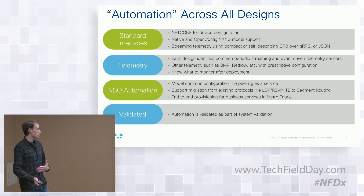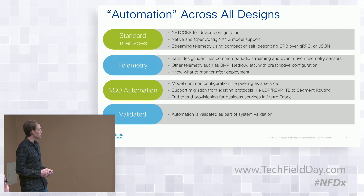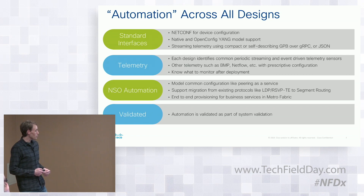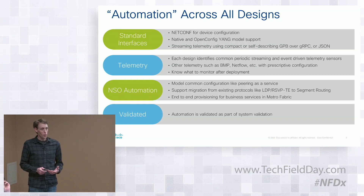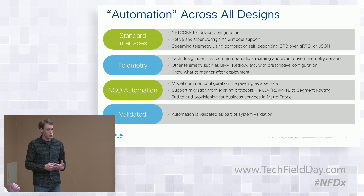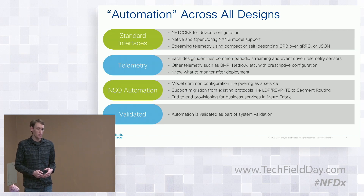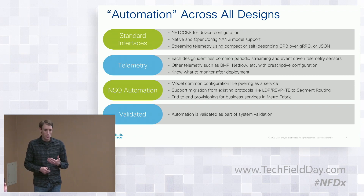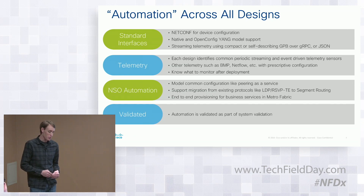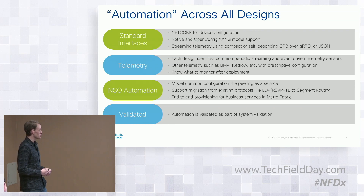What do we talk about when we talk about automation specifically? With these designs we've created, we have similar building blocks for automation. We're using standard interfaces and standard models to get data in and out of the network. The one thing we really wanted to do with telemetry is be prescriptive about what people should be monitoring in these designs and how they monitor it. Model-driven telemetry is a great thing, but not everybody knows — if I deploy a specific EVPN service, what streaming telemetry is helpful to operate and monitor the network? Searching through a YANG model to find the specific paths is pretty difficult.